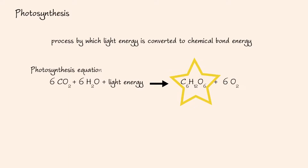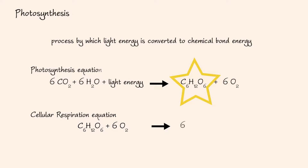This stored energy in glucose can be extracted and used to produce ATP by cellular respiration, a process described in the previous lecture. As a reminder, the cell respiration equation is given below: one glucose molecule plus 6 oxygen molecules produces 6 carbon dioxide plus 6 water molecules plus energy in the form of ATP. The ATP produced can be used to drive cellular work. Keep in mind, cellular respiration occurs in both plants and animals.